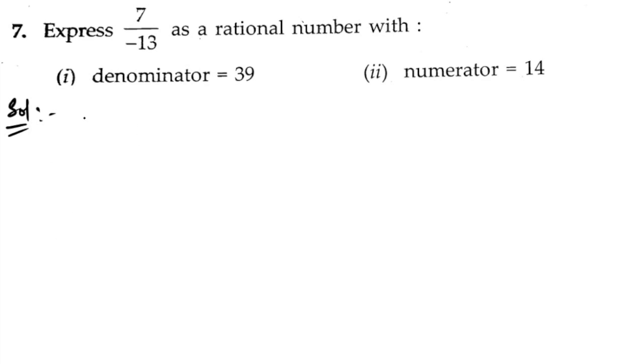For that, let us take first, we will take this number. The number given here is 7 by minus 13, is equals to—we know that 13 threes are 39. So let us write 7 by minus 13 into 3. 13 threes are 39.